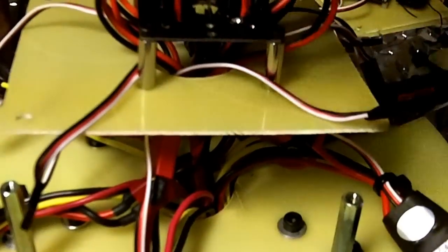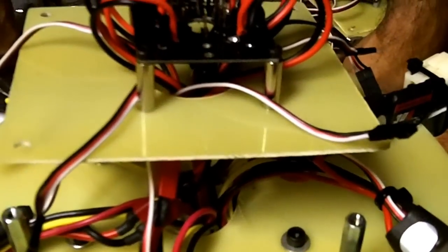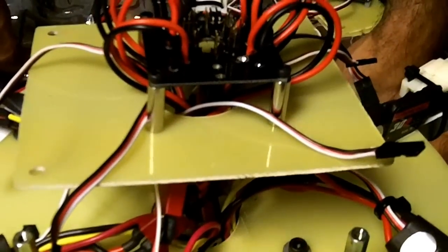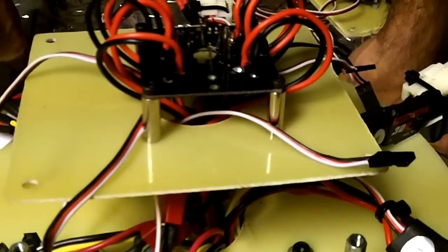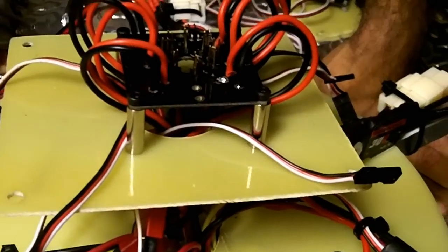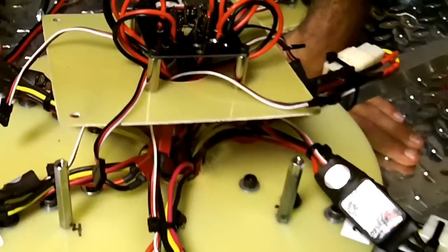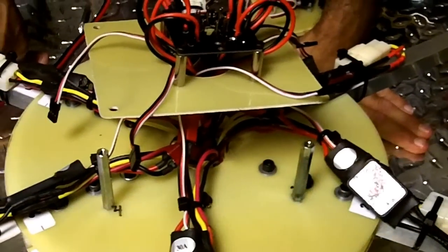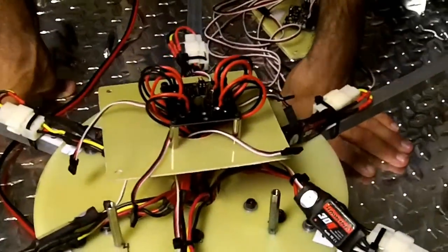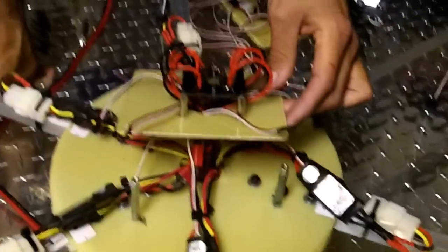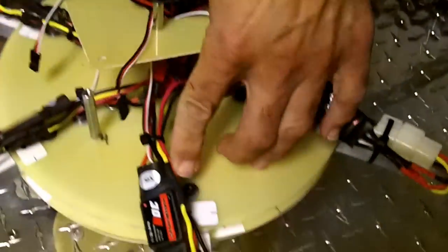Now if you look under there you could see there's Dean's connectors for each one of these ESCs. They weren't I wouldn't say expensive, but it took a while to get everything soldered. It took me about six hours to get this whole thing done and I know how to solder, so whoever's gonna do this is really in for a treat.